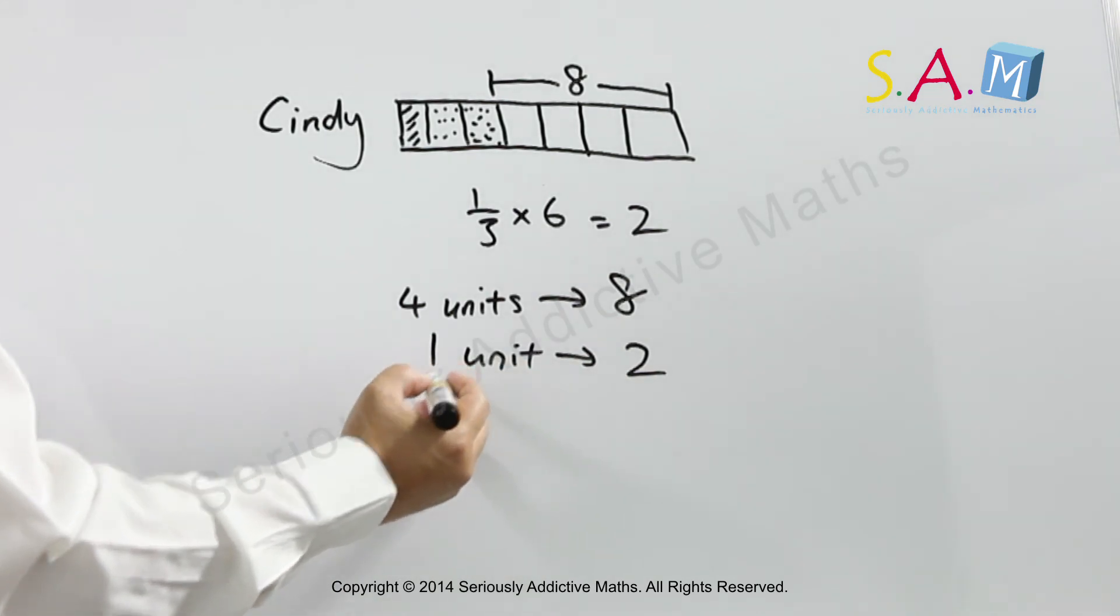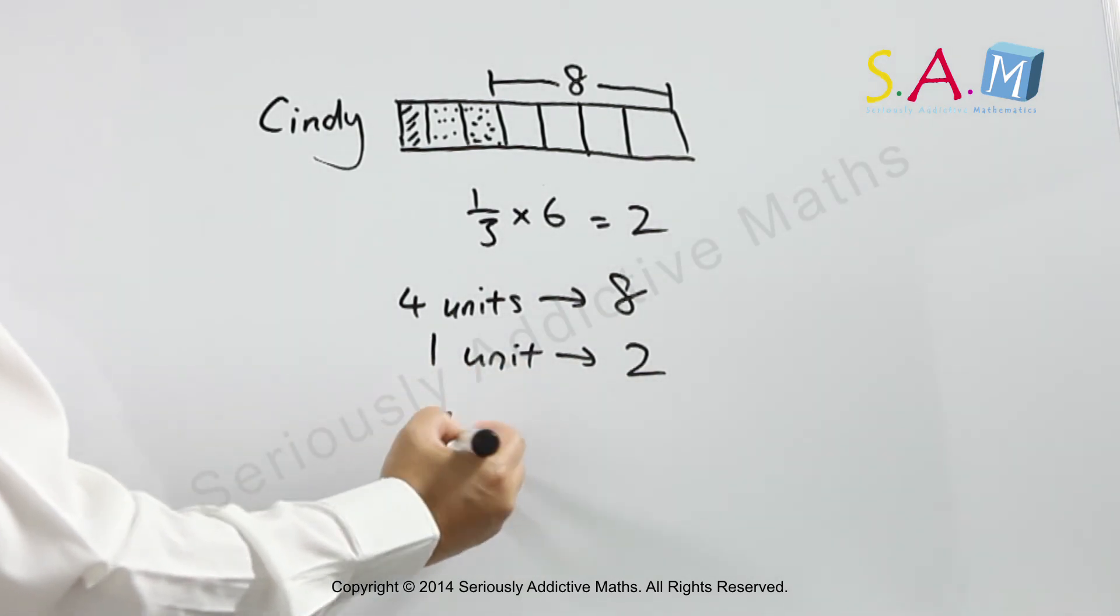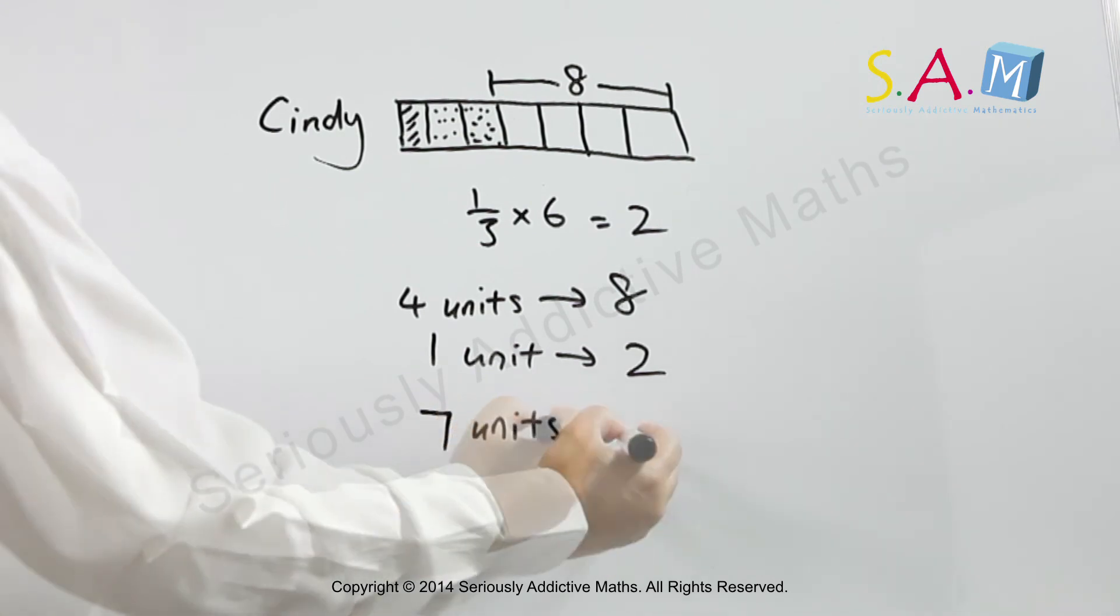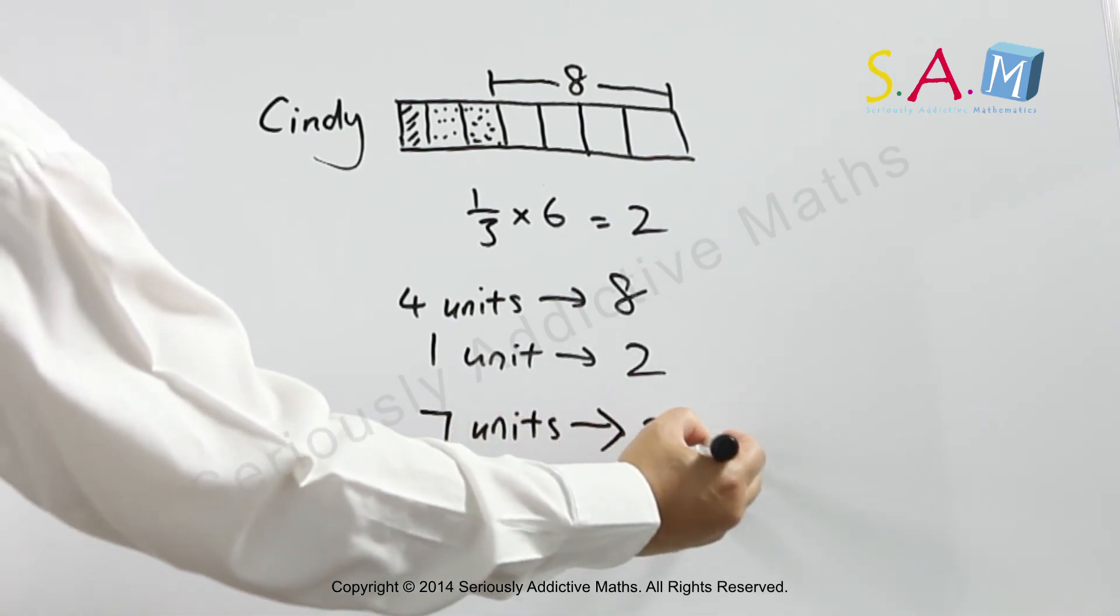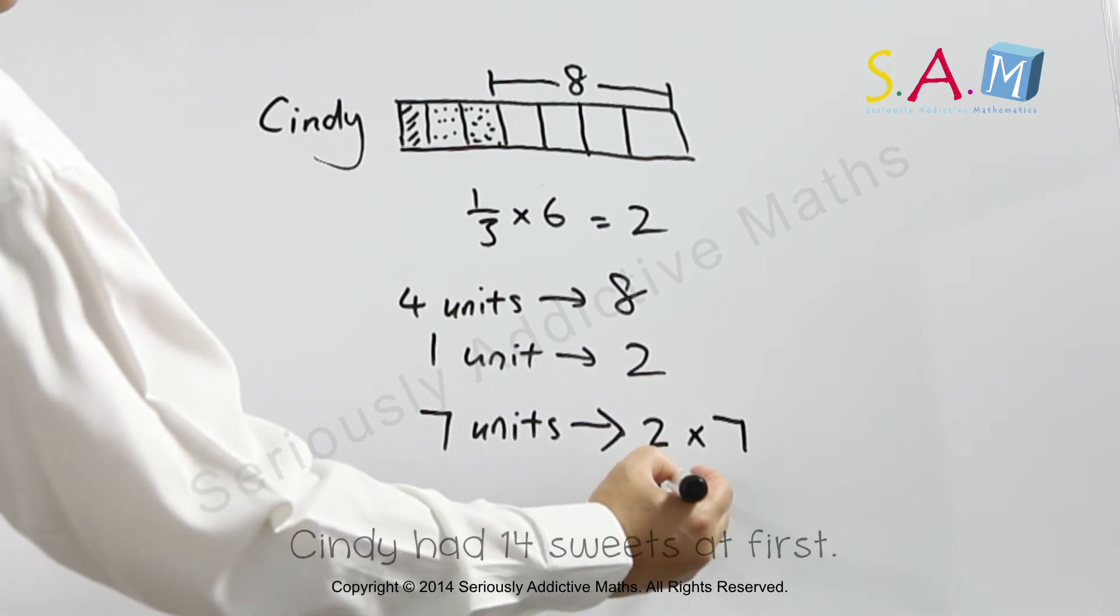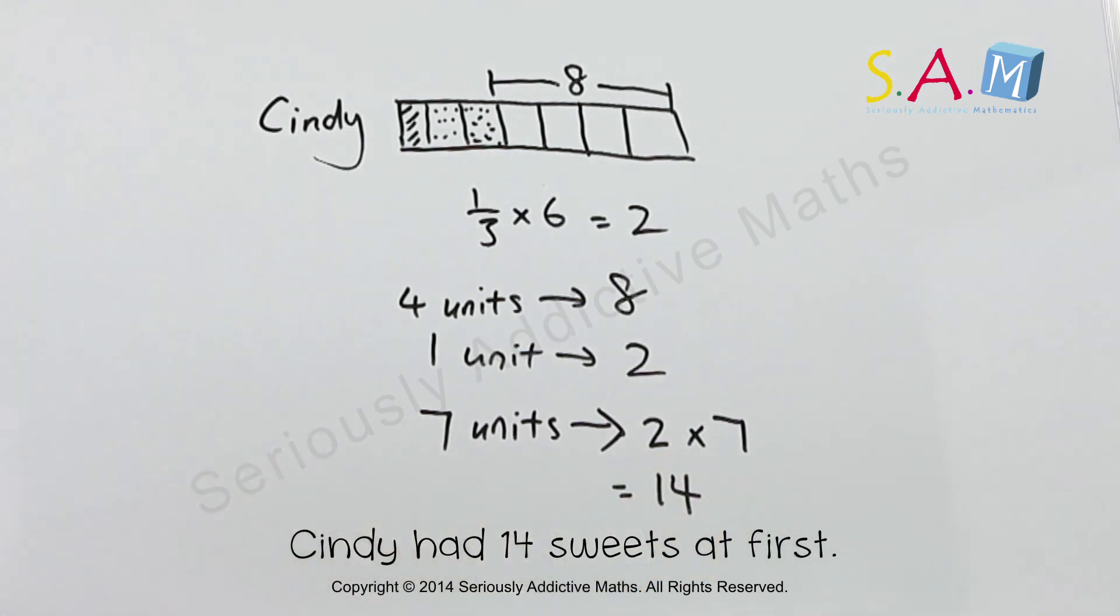How many sweets did Cindy have at first? So she has seven units. So she has seven units, which is actually two times seven, which is actually 14. So she has 14 sweets.